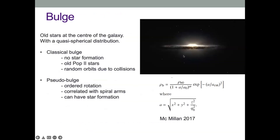Let's start looking at the phases of the galaxy. We have the bulge — old stars at the center, quasi-spherical distribution. In the classical bulge there's no star formation, only old population stars with random orbits, which is almost decoupled from the evolution of the disk. However, we've also found that you can get pseudo-bulges — these have ordered rotation, are correlated with spiral arm structure, and intriguingly can show some ongoing star formation in rare cases.